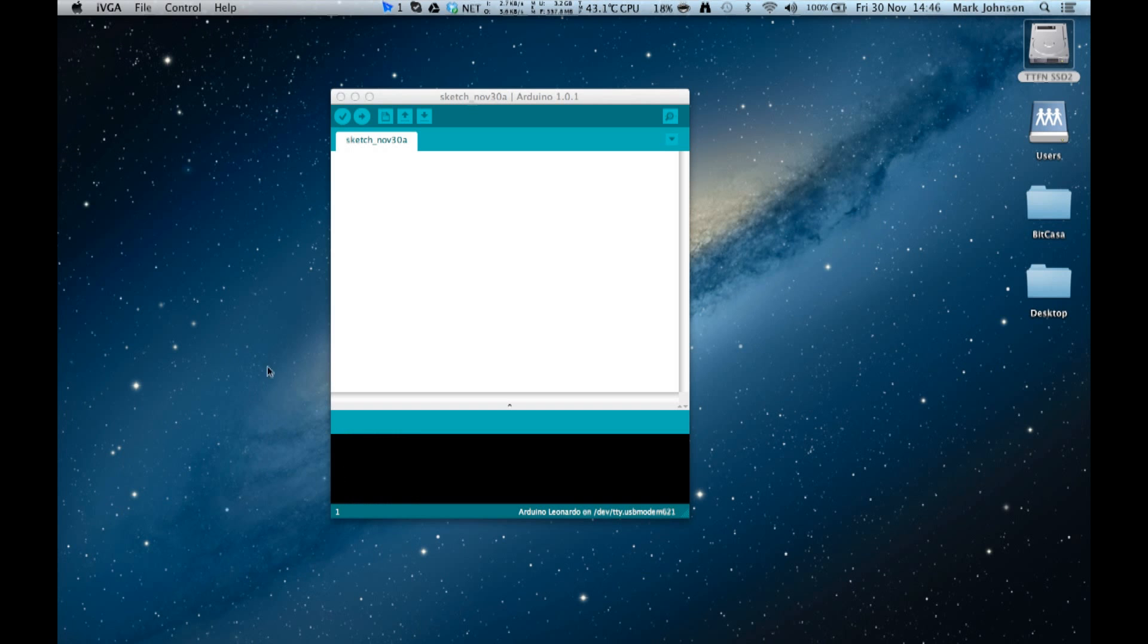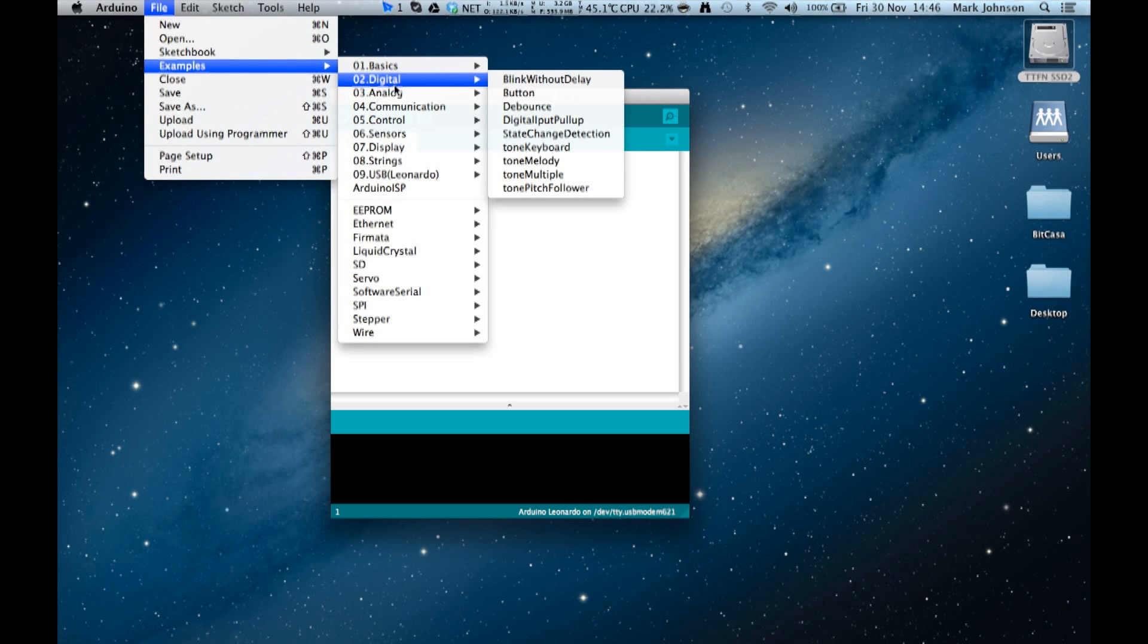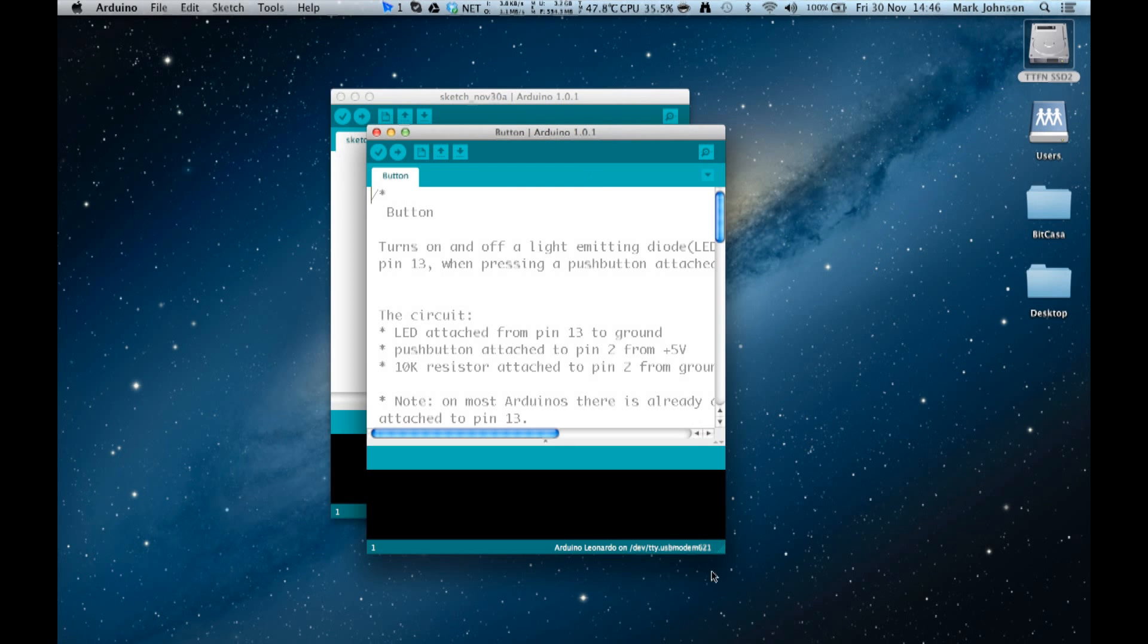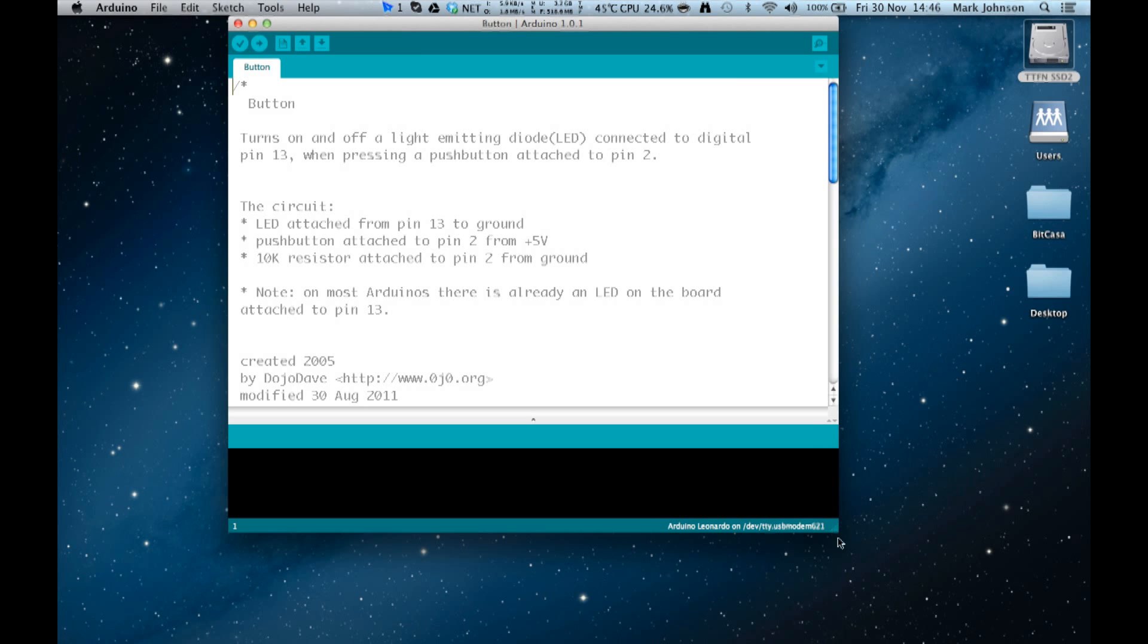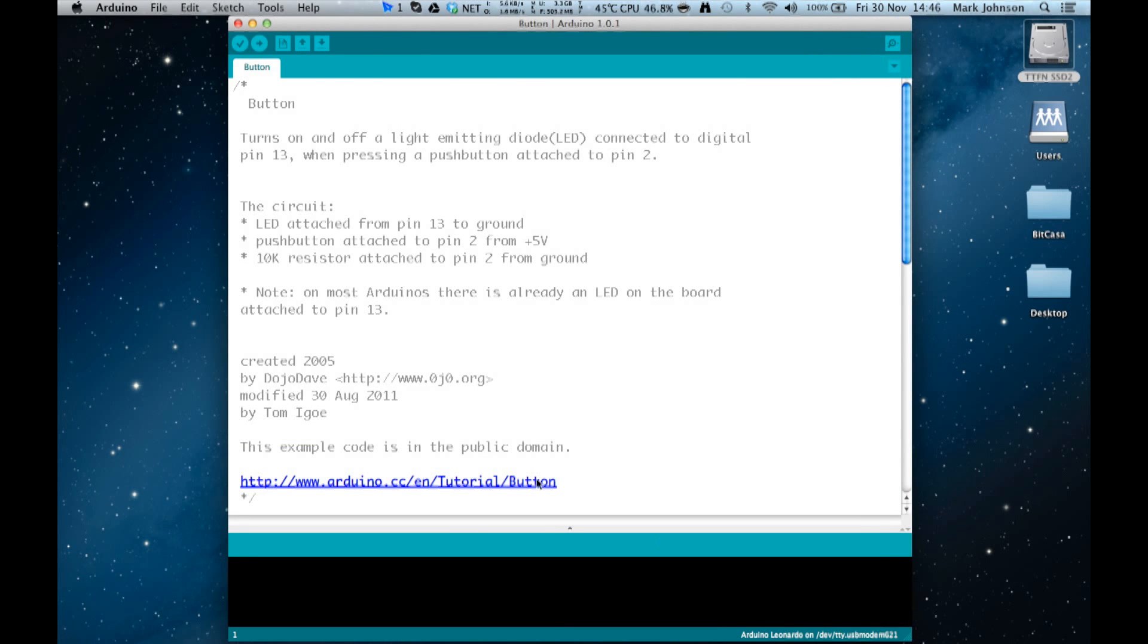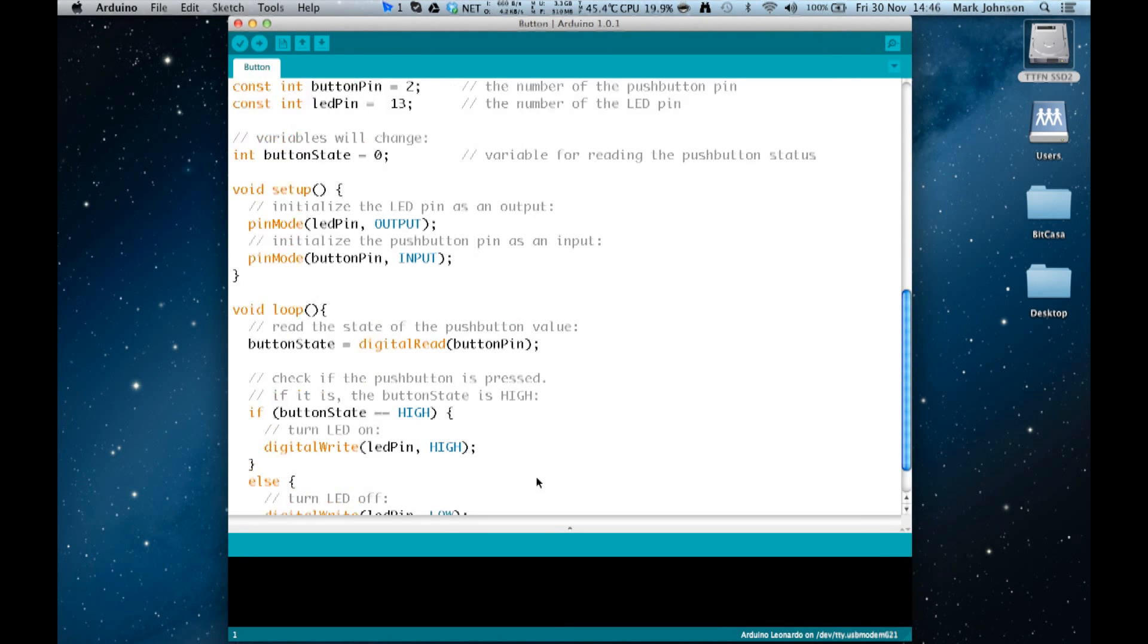So it looks like the hardware is all done, but now we have to look at the software. We're going to use one of the examples that come with the Arduino development environment. So let's load that up now. We're going to go to file, examples, digital, and button. Let's make this a little bit larger so you can read it. Let's go down to the code.